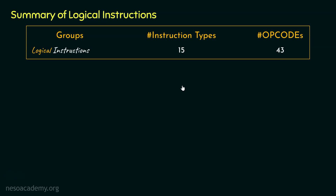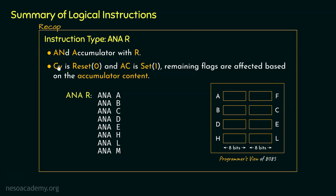The first logical group instruction we learnt was ANAR, which stands for AND accumulator's content with R, where R refers to the accumulator register. Executing ANAA performs AND between the accumulator's content and itself. Using ANAB, ANAC, and eventually ANAL, we can perform AND between the accumulator and the different general purpose registers. The instruction ANAM performs AND between the accumulator and the memory location pointed by the HL register pair. So for instruction type ANAR, we have 8 different instructions.